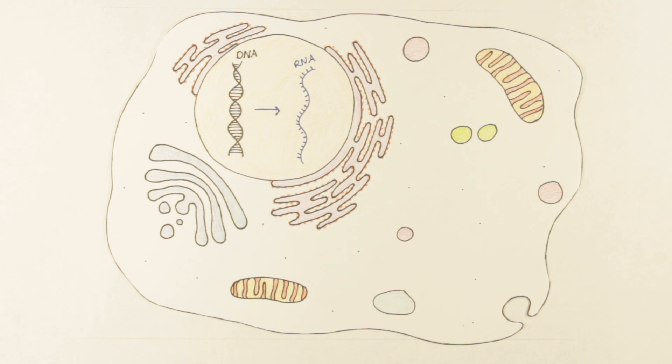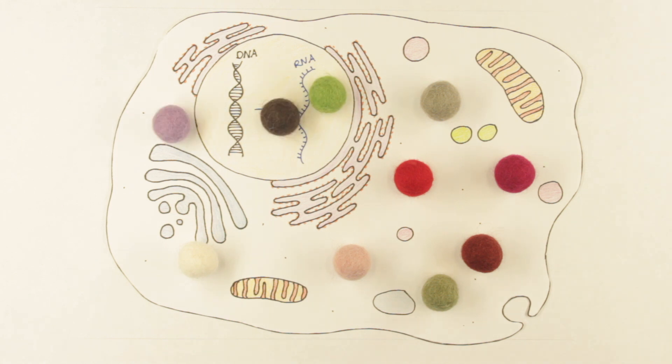So if we zoom out, we have a eukaryotic cell that produces all these different extra proteins. But the main question remains: how do these extra proteins contribute to disease pathology in neurodegenerative disorders?